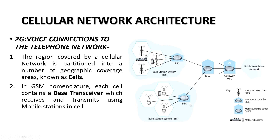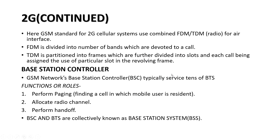What is the function of BSC? It performs paging — meaning it finds out in which cell the mobile node is located. As you can see, these are hexagonal cells, and paging means finding which hexagon the mobile node is in. It also allocates radio channels. So the base station controller performs both paging and radio channel allocation.